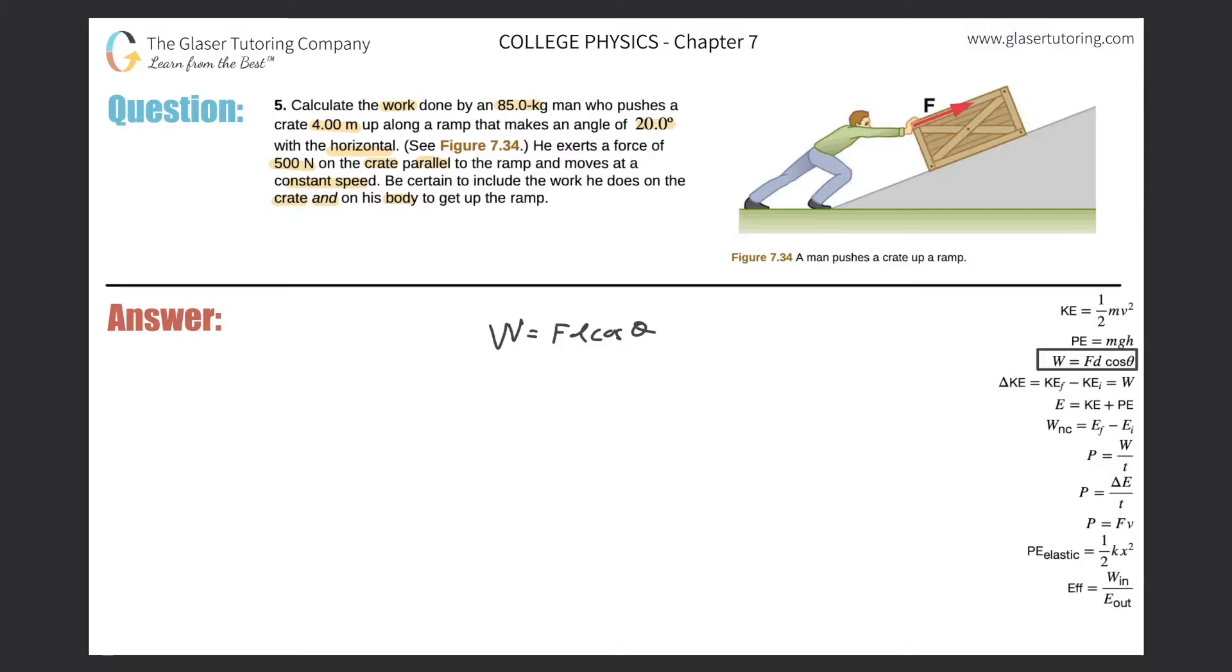We know the crate moved four meters up the incline and that the force was 500 newtons and parallel to the ramp. Both the distance that this crate travels and the force are parallel to one another, so the work would equal 500 newtons times the displacement of four meters multiplied by the cosine of zero. The work done is 2000 joules - this is the work for the crate.